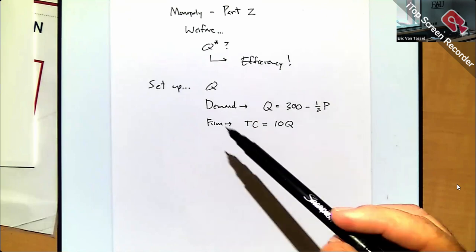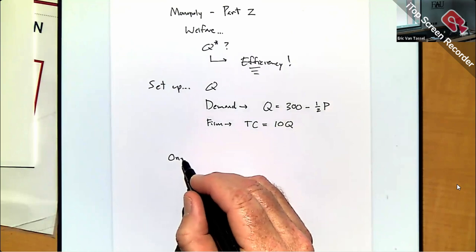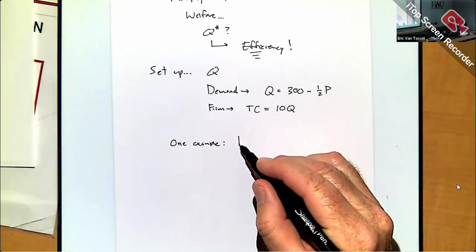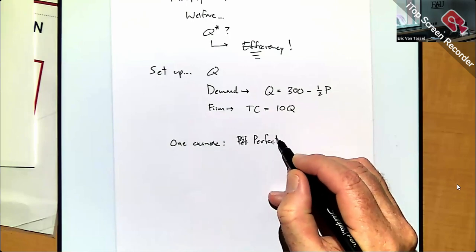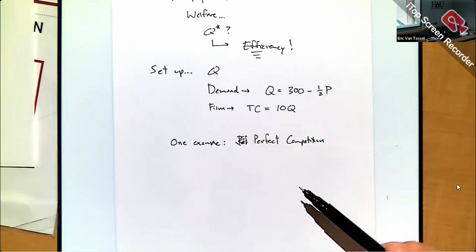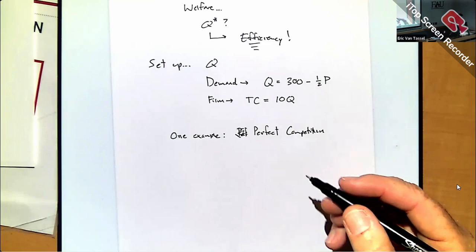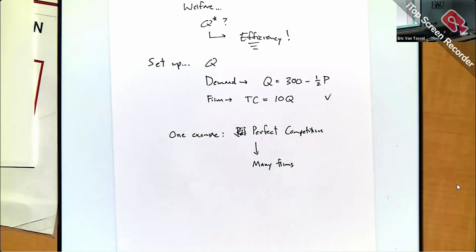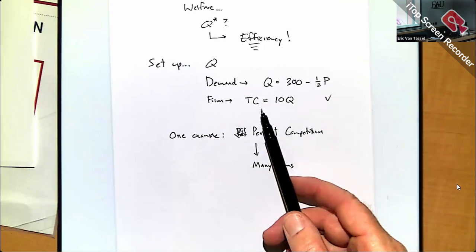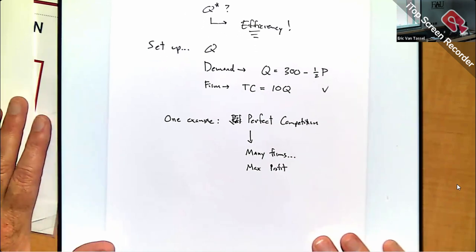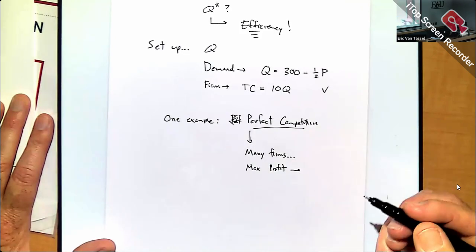One example is a market with perfect competition. I'm not going to set this up rigorously — I'm using it only as a benchmark compared to the monopolist setting. For perfect competition, remember we have many firms, and a way to think about that here is they're all identical with a similar cost function like TC equals 10Q, and they're all maximizing profit.